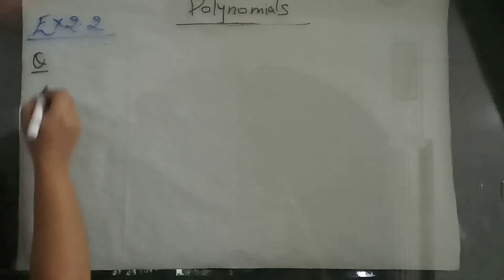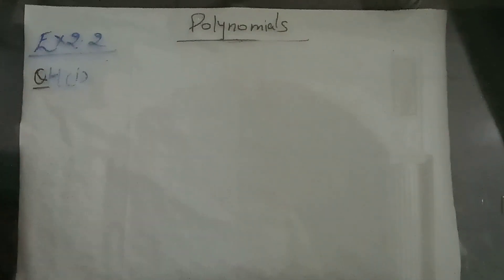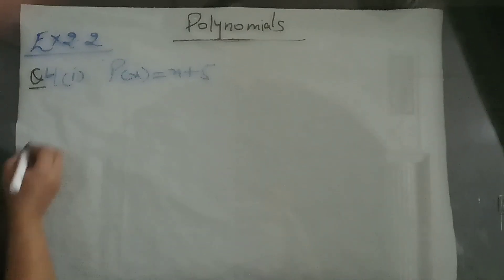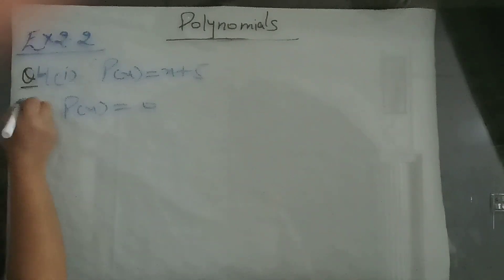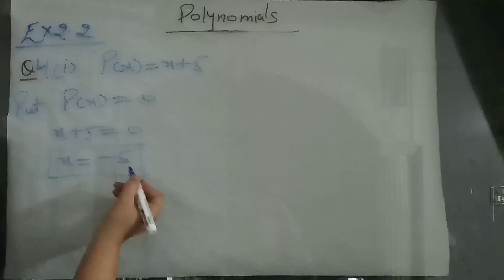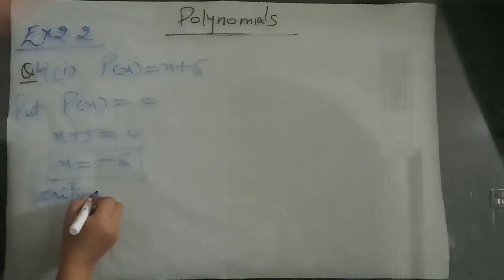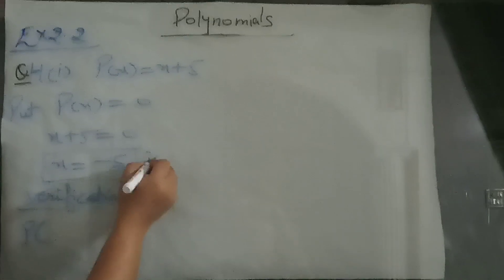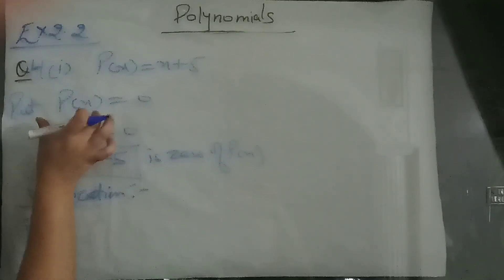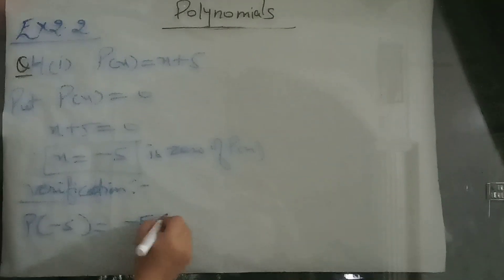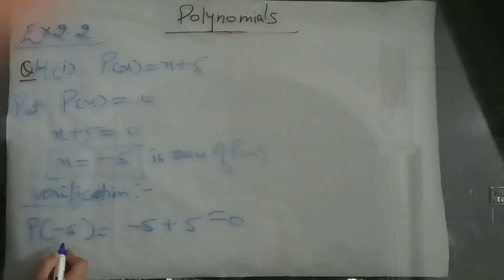Question 4: find the zeros of the polynomial in each case. First part, p of x is equal to x plus 5. For finding the zero of the polynomial, put p(x) equal to 0. You get x plus 5 equal to 0, so x is minus 5. Minus 5 is the zero of the polynomial. For verification, put minus 5 in p(x): the answer is 0, confirming it is the zero.